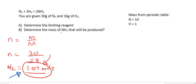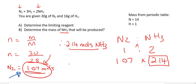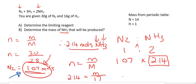Part B says: determine the mass of NH₃ that will be produced. The ratio of nitrogen to NH₃ is 1 to 2. We have 1.07 moles of nitrogen, so we multiply by 2 to get 2.14 moles of NH₃. Using n = m over M, with moles 2.14 and molar mass of NH₃ equal to 17, we get a mass of 36.38 grams of NH₃.